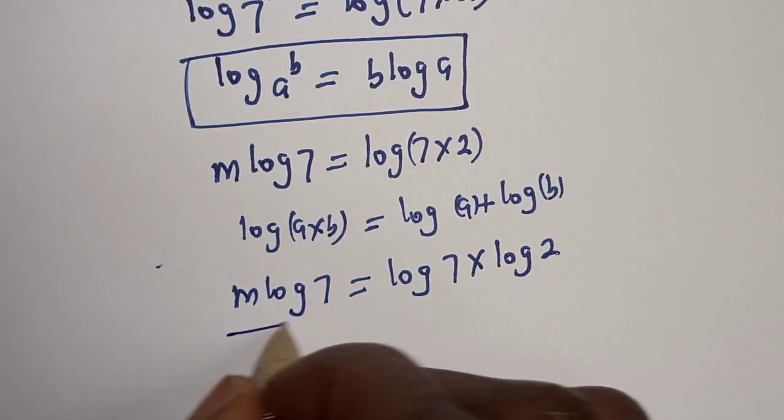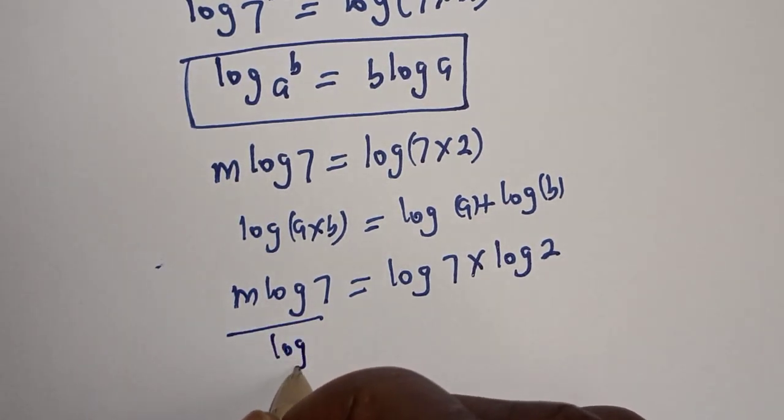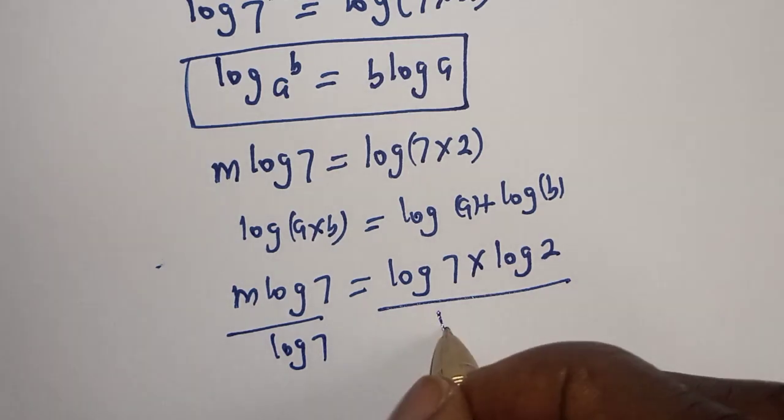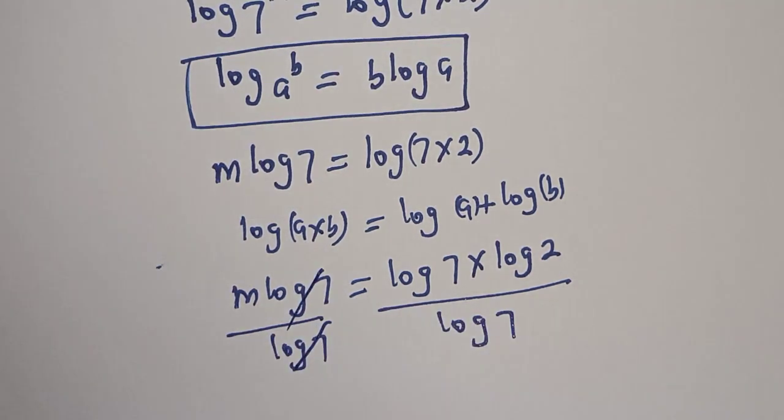We are looking for the value of m. Let's divide both sides by log 7. This will cancel this.